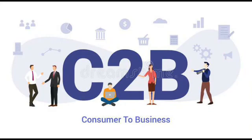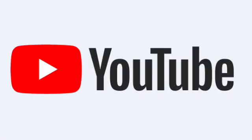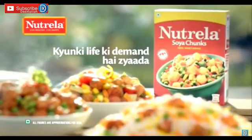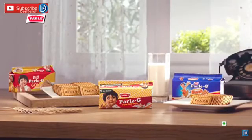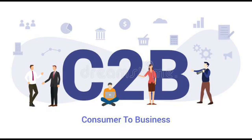The next model is consumer to business (C2B). In this model, consumers or individuals create value and businesses consume that value. For example, when a consumer writes a review or gives a useful idea for new product development, that consumer is creating value for the business. This is the complete reverse of B2C and is currently very popular. For instance, when a video is posted on YouTube and gets many views, YouTube attaches advertisements to the channel and earns money. Whenever a viewer watches that advertisement, YouTube gets money from the advertiser — forming a consumer to business model.